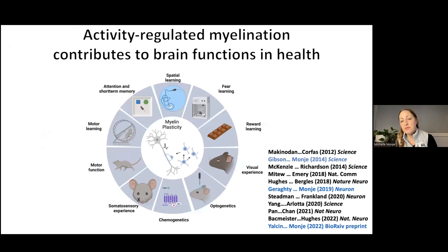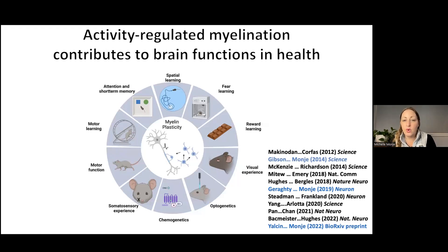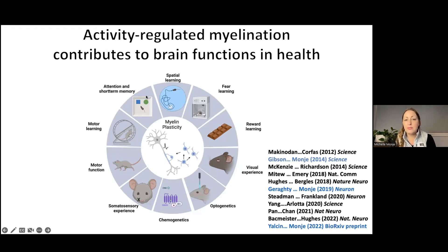Using this strategy of specifically blocking activity-dependent myelination, we and others in the field have identified a number of important roles for activity-regulated changes in myelin across a range of neurocognitive and neuropsychiatric functions, including motor function and motor learning, attention, memory encoding, consolidation of spatial and fear memories, learning, reward learning, and visual experience. We're really just beginning to understand the roles of these activity-dependent changes in myelin.